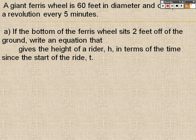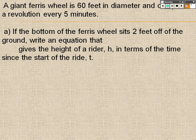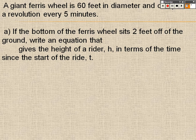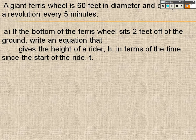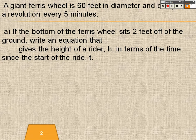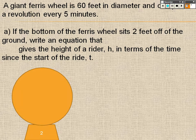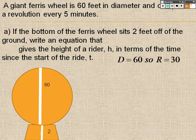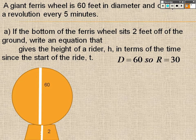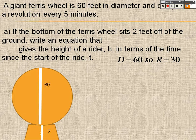So a giant Ferris wheel is 60 feet in diameter, and has a revolution every five minutes. At the bottom of the Ferris wheel sits two feet off the ground. Write an equation that gives the height of a rider, h, in terms of the time since the start of the ride, t. So I know that we have a giant Ferris wheel. I know that it is two feet off the ground. I also know that the diameter of the wheel is 60. So I know the diameter is 60, and that means I know the radius is 30.